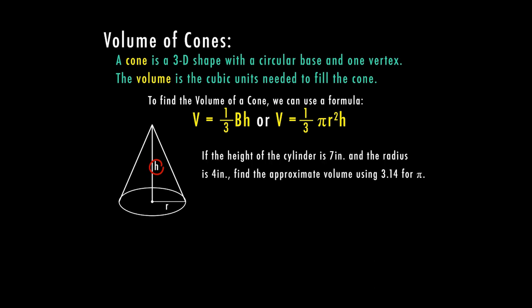So if the height of a cylinder is seven inches, and the radius is four inches, we want to find the approximate volume using 3.14 for pi. So again, we're just going to use our formula here, and we're going to plug in what we know. So we know one third, and we know times pi. So that's our 3.14. And then we're going to plug in our radius. The radius on this problem is four inches. So that's four squared times the height, which is seven inches.